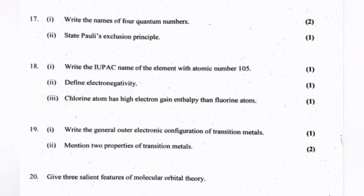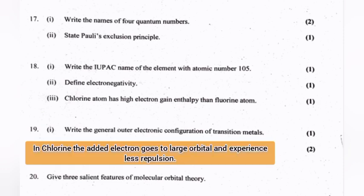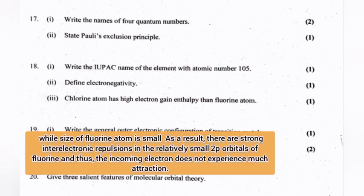Chlorine atom has higher electron gain enthalpy than fluorine atom. In chlorine, the added electron goes to larger orbitals and experiences less repulsion. While the size of fluorine atom is small, there are strong inter-electronic repulsions in the relatively small 2p orbitals of fluorine, and thus the incoming electron does not experience much attraction.